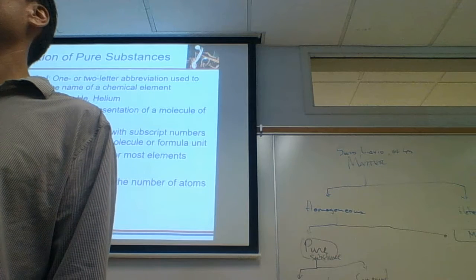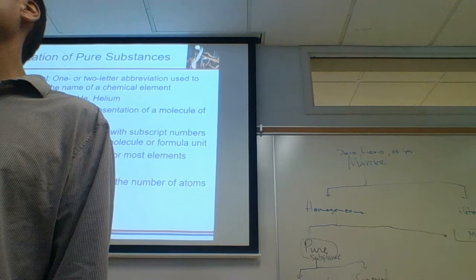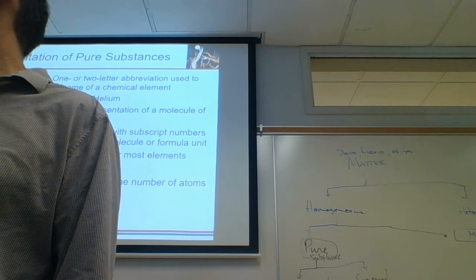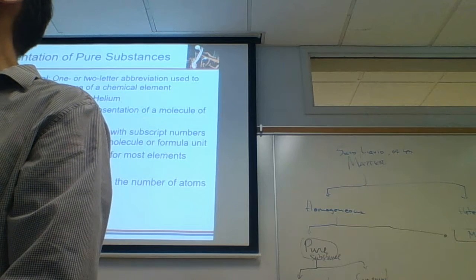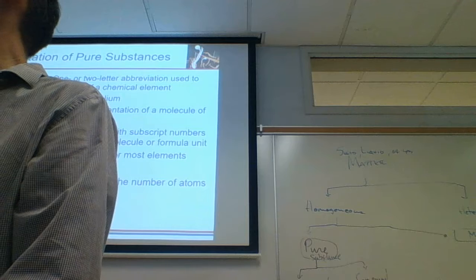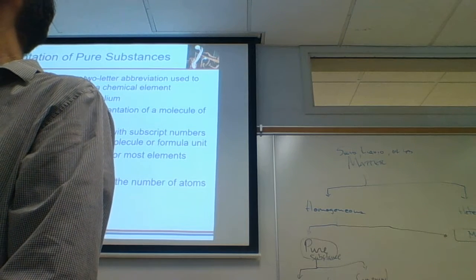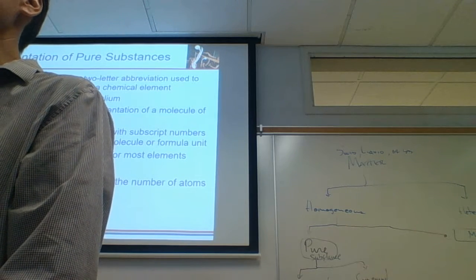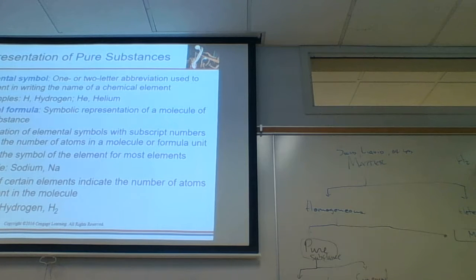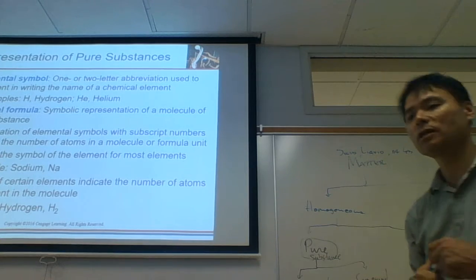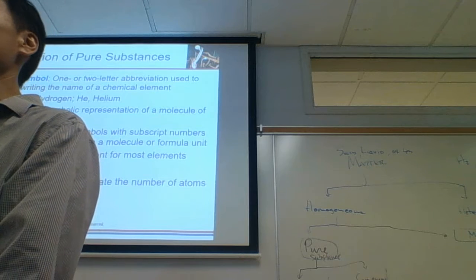Sulfur likes to form eight-membered rings like a crown. The seven diatomics are: hydrogen, nitrogen, oxygen, fluorine, chlorine, bromine, and iodine. You should know these as the seven diatomics. When someone talks about oxygen the element, they mean O2 — that's what we breathe. You don't want to breathe much O3.